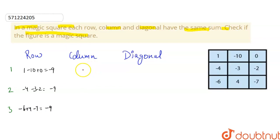For first column, sum is 1 minus 4 minus 6, which is also minus 9. And for column 2, the sum is minus 10 minus 3 plus 4, which is also minus 9.